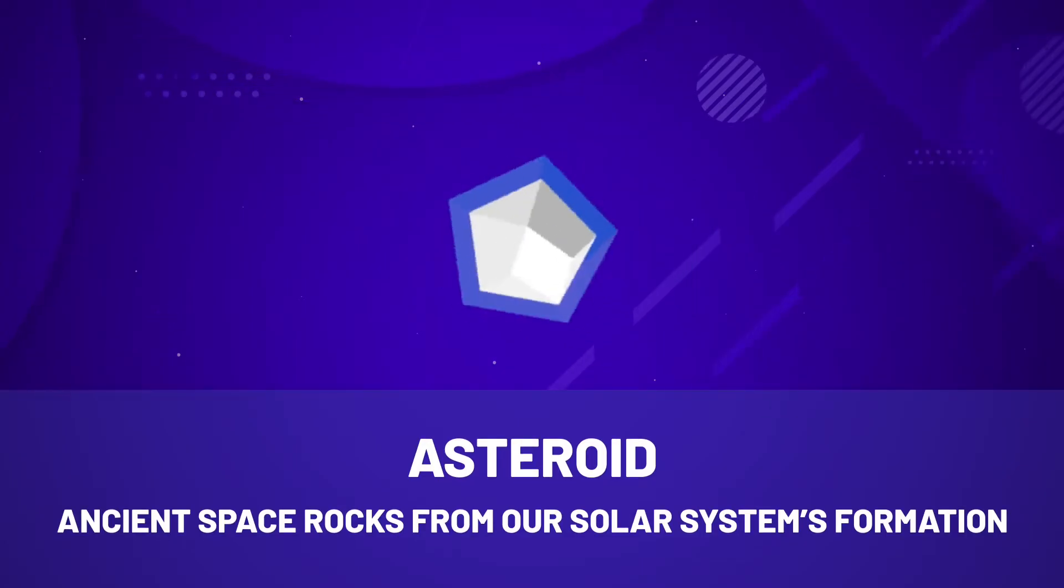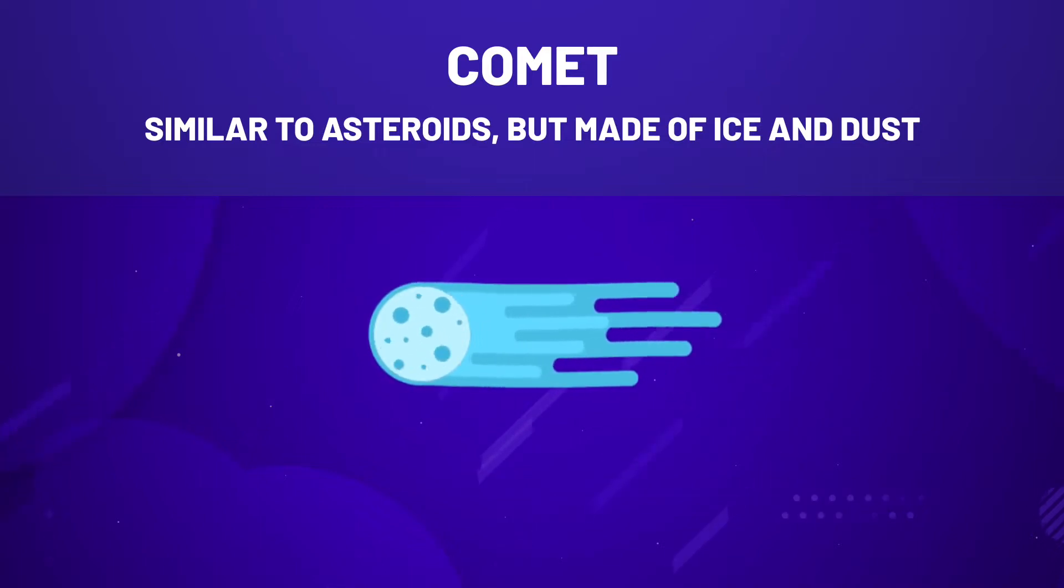Asteroids are rocky bodies that orbit the Sun. Comets are a bit like asteroids but are made of ice and dust instead of rock.